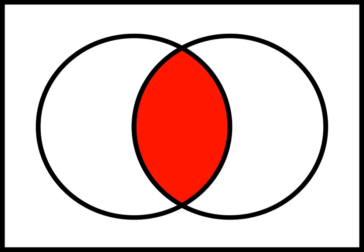In mathematics, the intersection A∩B of two sets A and B is the set that contains all elements of A that also belong to B, or equivalently,